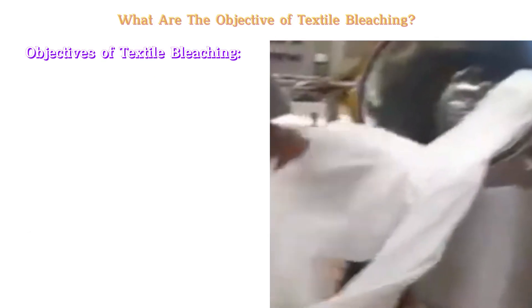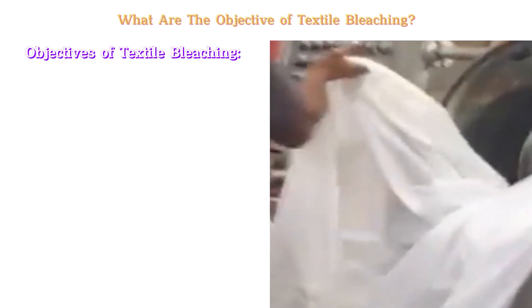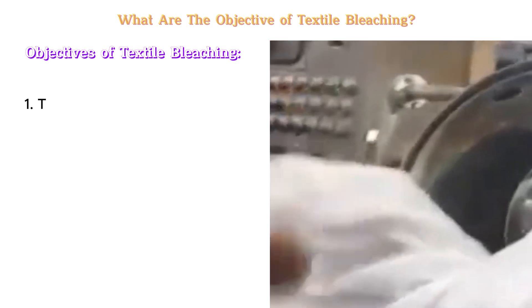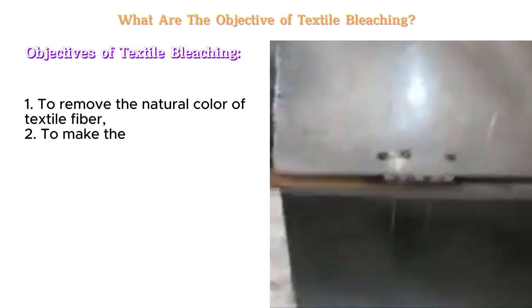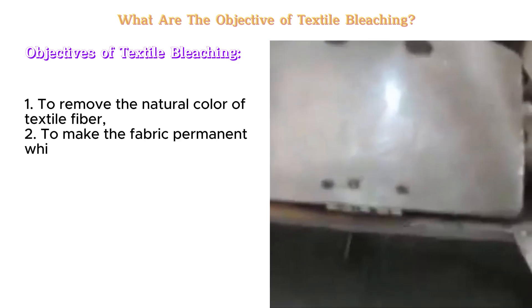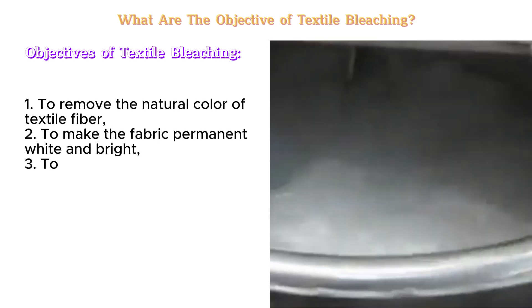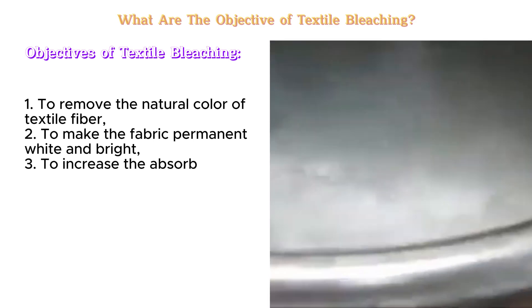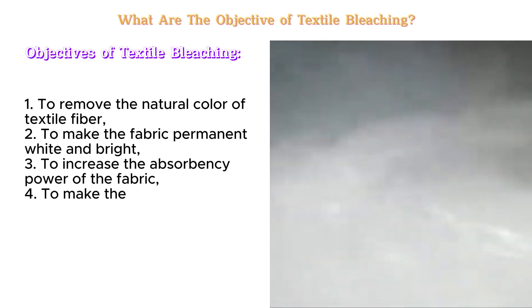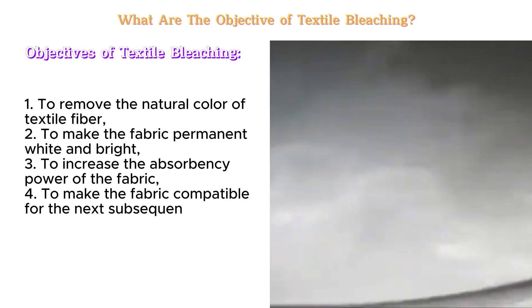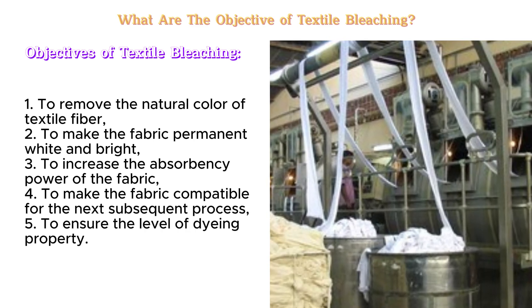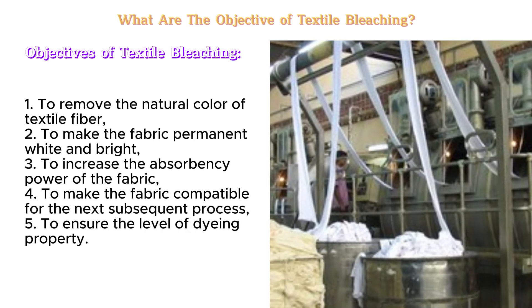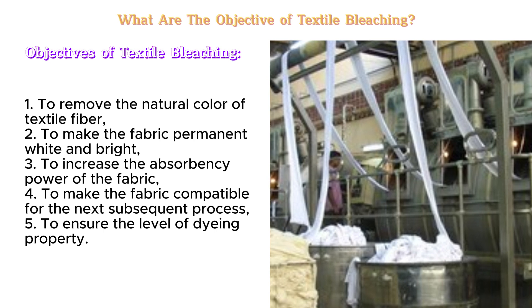Objectives of textile bleaching: To remove the natural colour of textile fibre. To make the fabric permanent white and bright. To increase the absorbency power of the fabric. To make the fabric compatible for the next subsequent process, and to ensure the level of dyeing property.